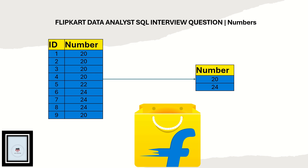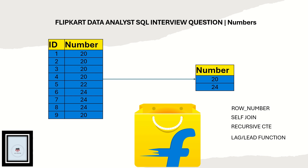This question has to be solved using four ways. First one is using the ROW_NUMBER function, second one is using the self-join method, third one is using recursive CTE, and fourth one is using the LAG or LEAD function. Now let us go to SQL Server Studio and understand the logic and how to solve this using all four methods.